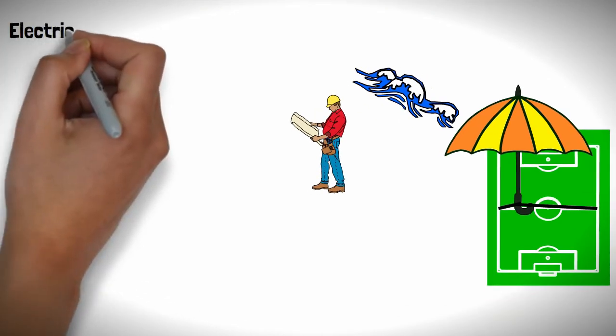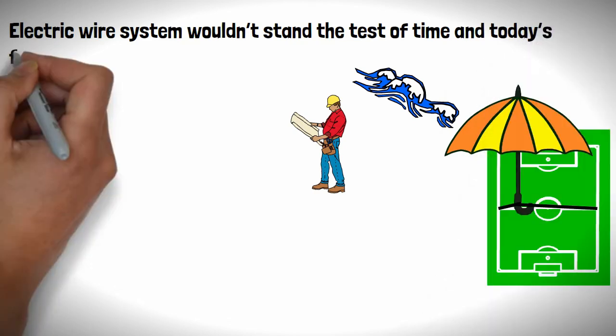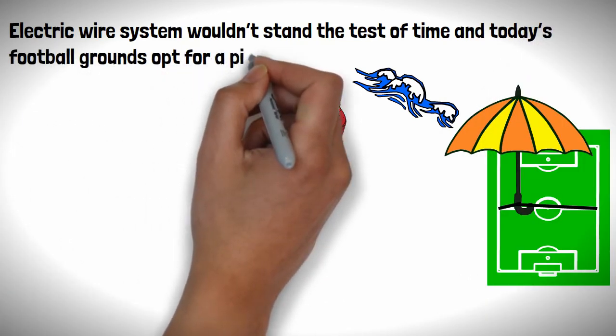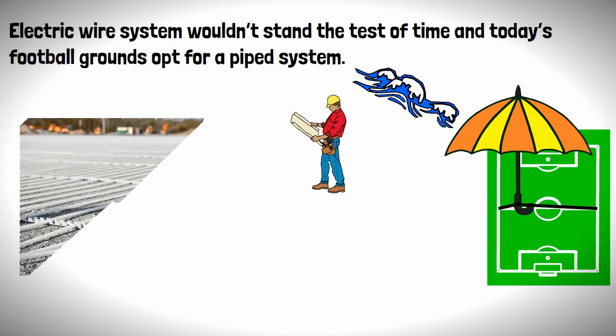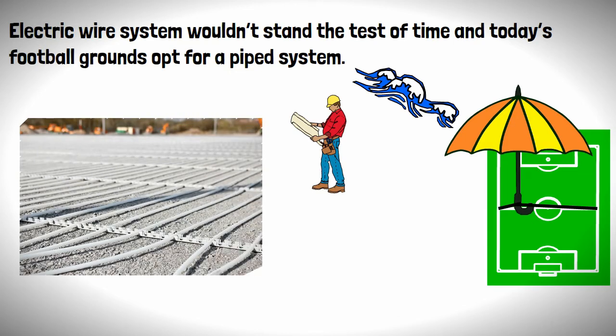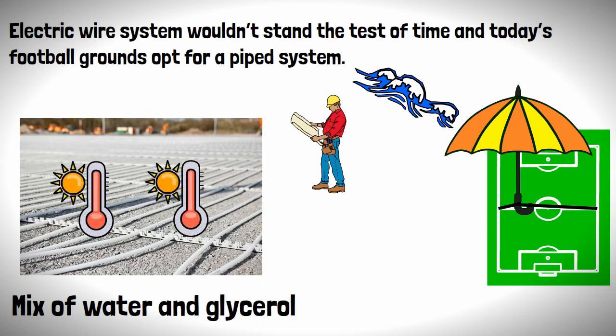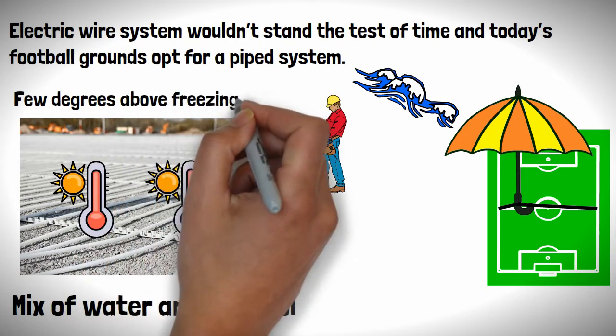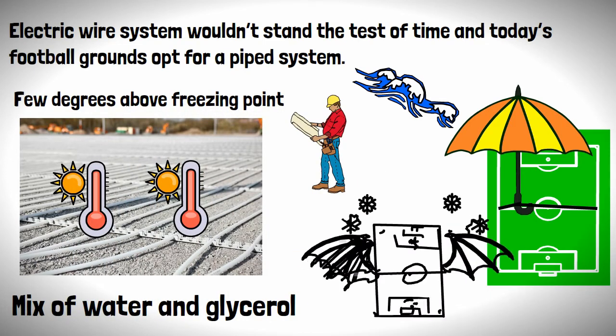However despite its efficiency the electric wire system wouldn't stand the test of time and today's football grounds opt for a pipe system. This consists of pipes which run approximately 30 centimeters under the pitch in which a mix of water and glycerol are passed through the pipes which raises the ground temperature to a few degrees above freezing point and if used correctly banishes the frozen pitch demons for good.